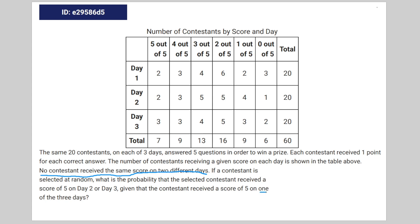This detail — 'just one of the three days' — is kind of useless, because you can't get a score of five on more than one day. Because again, no contestant received the same score on two different days. So the entire pool of people that got a five out of five here only got it once.